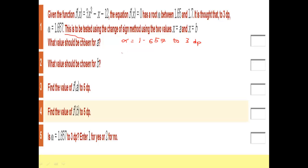then we know that alpha must lie between 1.6565, anything less than that would round down to 1.656, wouldn't it?